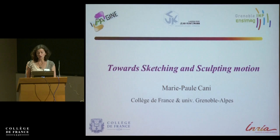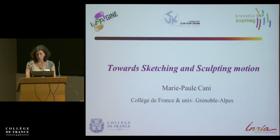So far we have talked about creating shapes we imagine, but it was mostly static shapes, then shapes that can be printed and put into motion with the last talk, but of course with virtual motion we can do much more. So how can we use these creative interfaces such as sketch-based modeling and sculpting for creating motion?